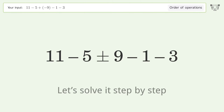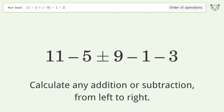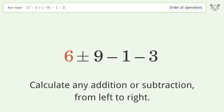Let's solve it step by step. Calculate any addition or subtraction from left to right: 11 minus 5 equals 6. Minus plus minus.